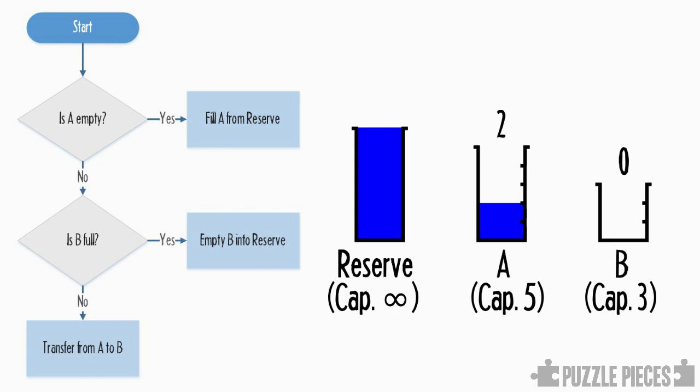OK, stepping through again. Well, A is not empty, and B is not full, so we'll just transfer as much as we can from A into B. And this time, we can actually fit all of the two units across into B, without spilling any. So, that leaves us with none in A, and 2 in B.